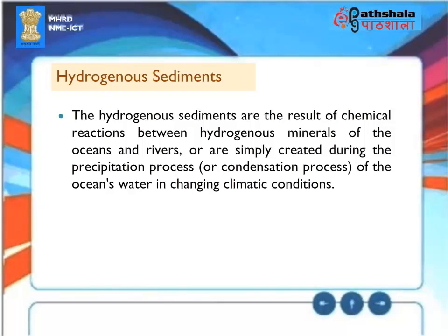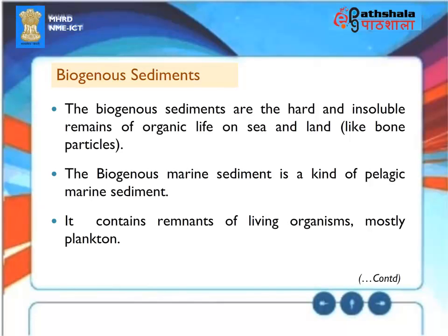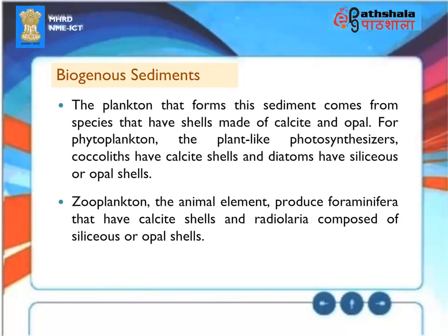Biogenous Sediments: Biogenous sediments are the hard and insoluble remains of organic life on sea and land, such as bone particles. Biogenous marine sediment is a kind of pelagic marine sediment containing remnants of living organisms, mostly plankton. The plankton that forms this sediment comes from species with shells made of calcite and opal. For phytoplankton, coccoliths have calcite shells and diatoms have siliceous or opal shells. For zooplankton, foraminifera have calcite shells and radiolaria are composed of siliceous or opal shells.